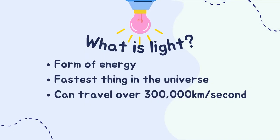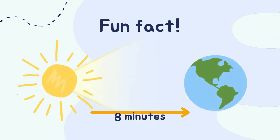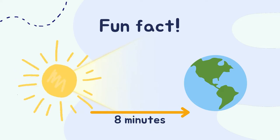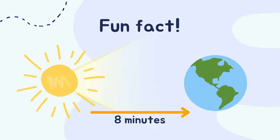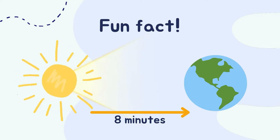What is light? Light is a form of energy. It is the fastest thing in the universe. Light can travel over 300,000 kilometers a second. Fun fact: it only takes 8 minutes for light to reach the Earth from the Sun. This beats any spaceships out there.